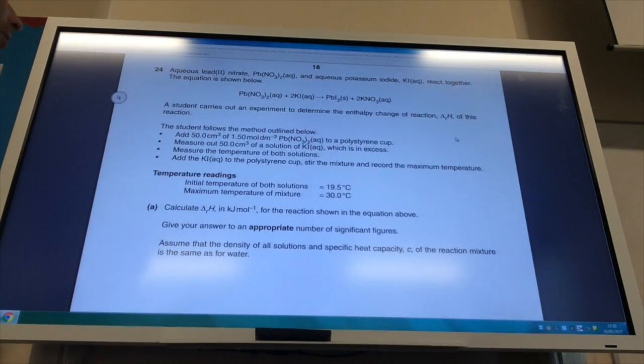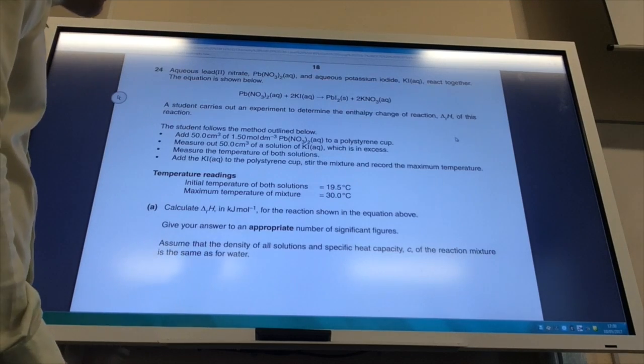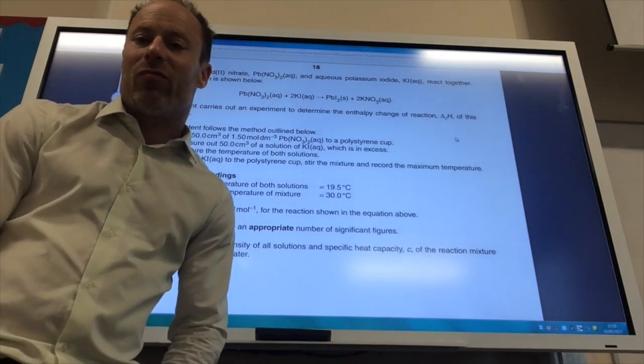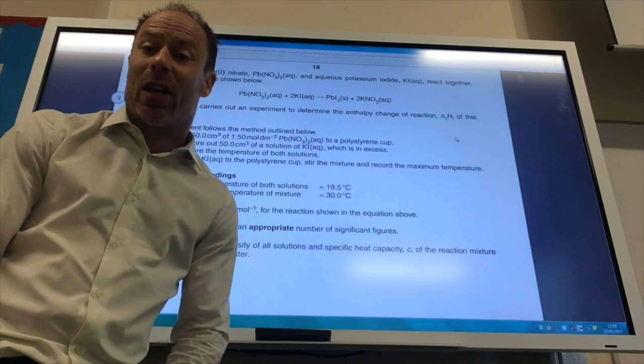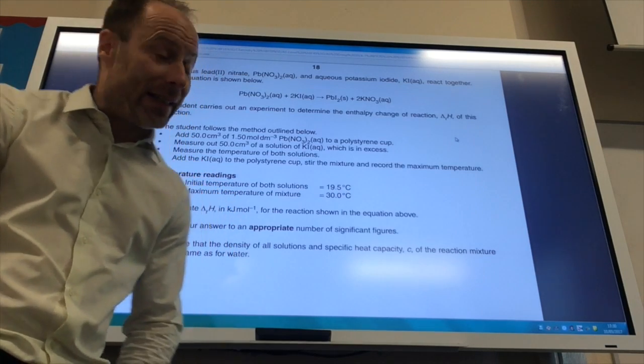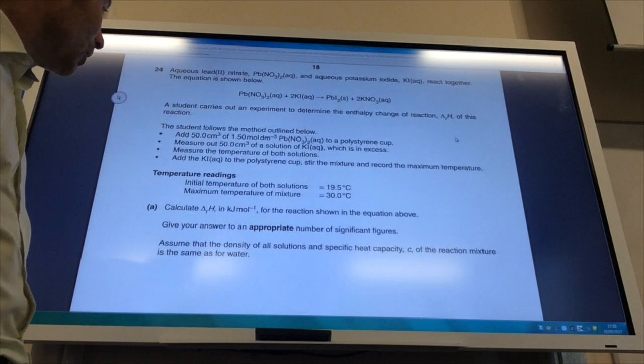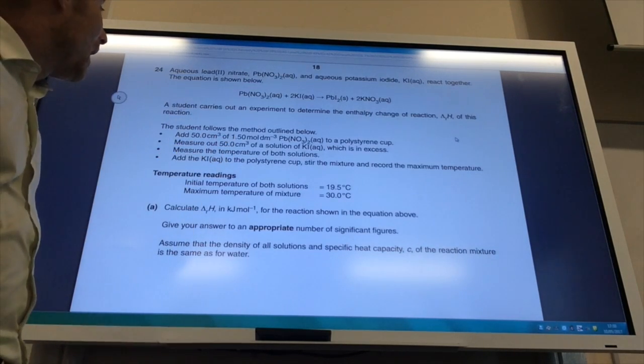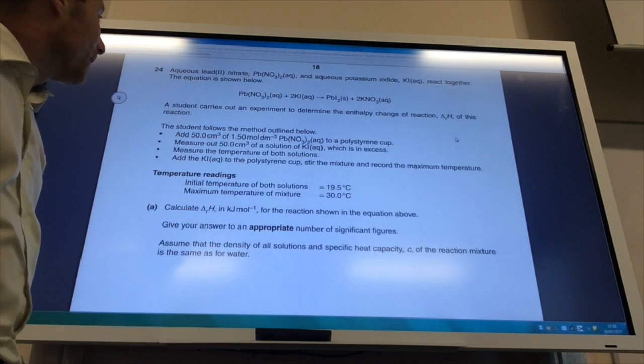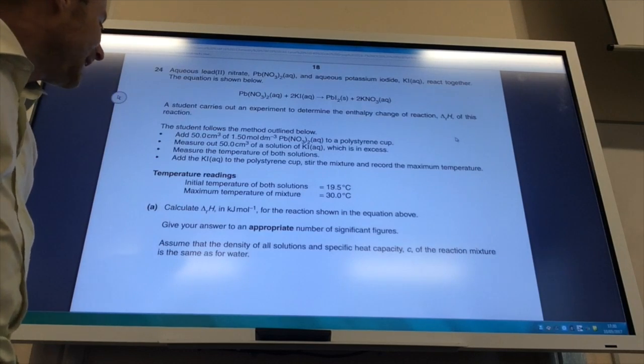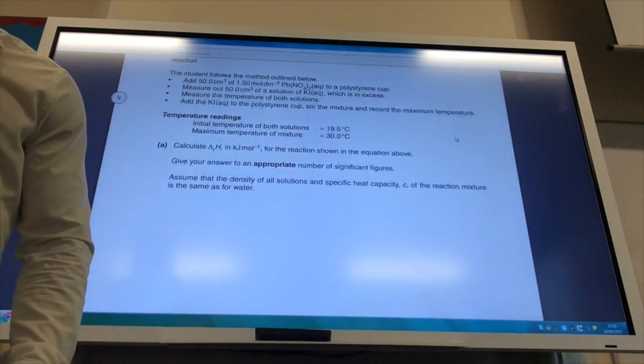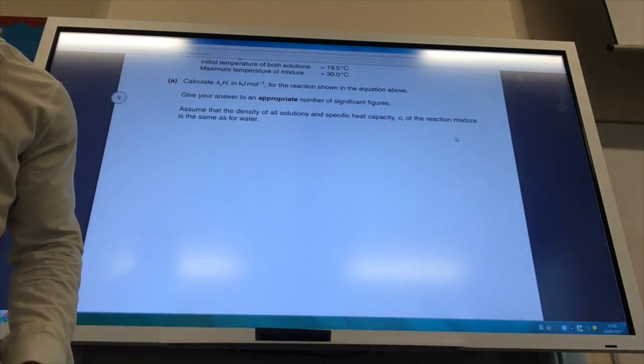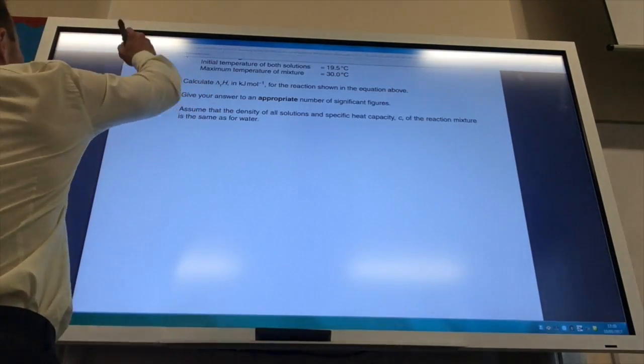Right, so I've now got a nice enthalpy question to work my way through. It gives me various bits of experimental data and I'm reacting lead nitrate with potassium iodide. Note that potassium iodide is in excess. They tell you here, but they give me the volume and concentration of lead nitrate. So we need to determine first of all the energy produced. How do I know the energy is produced? Well it's because my temperature has gone up.